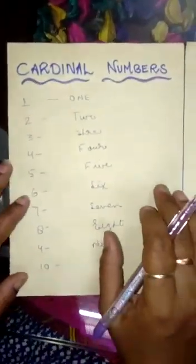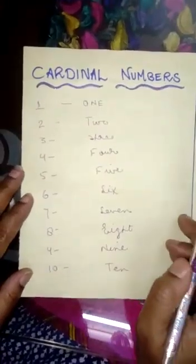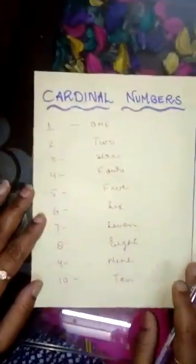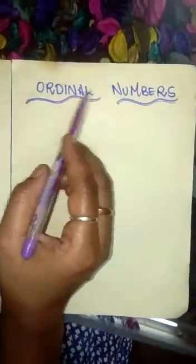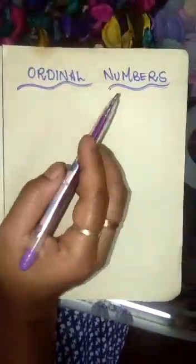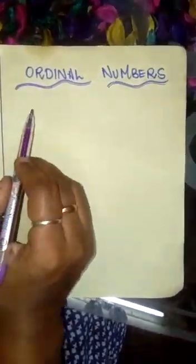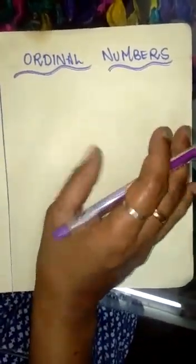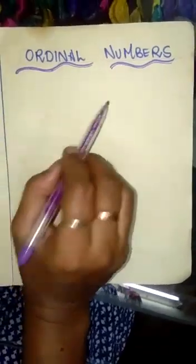So children, which topic have I explained just now? Cardinal number. Yes, say all of you — cardinal number. Now our next topic is ordinal numbers. Ordinal numbers — what is an ordinal number? The number which indicates the position. What is the ordinal number? Ordinal number indicates the position.